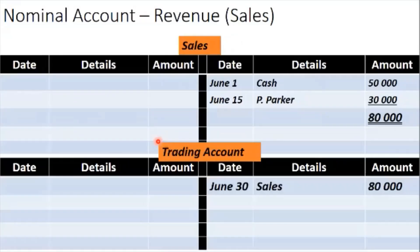Now we look at nominal accounts. The first one is sales — the revenue account. Nominal accounts are balanced differently from real and personal accounts. Real and personal accounts are balanced the same way, but nominal accounts are handled differently. Nominal accounts are just for one period — when we balance and close them off, we do not carry the balance into another period. Instead, we transfer the balances to the trading account for revenues.